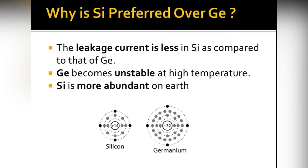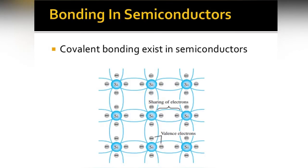Since the distance from the nucleus is greater in germanium, the force of attraction is weaker. Even at small temperatures, the electrons in germanium tend to move from their orbit, so the leakage current is more in germanium at very small temperatures. Therefore silicon is preferred over germanium. Additionally, germanium becomes unstable at high temperatures, while silicon is cheaper and more abundantly available on Earth.